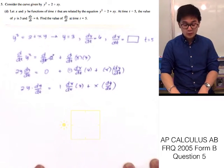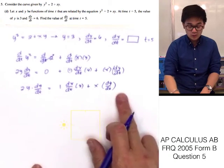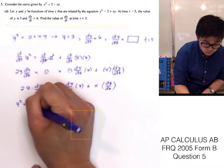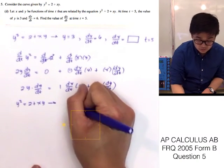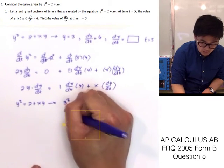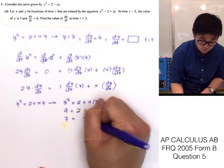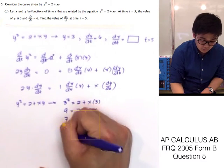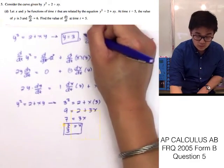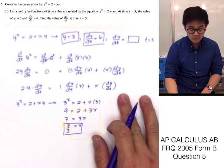We have y and dy/dt but need the value of x. Using the original curve y squared equals 2 plus xy with y equals 3: 3 squared equals 2 plus 3x, so 9 equals 2 plus 3x. Subtracting 2 from both sides gives 7 equals 3x, therefore x equals 7/3. Now we have all the values needed to find dx/dt.